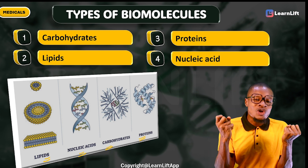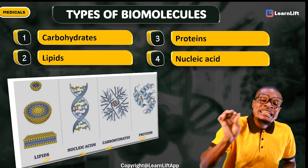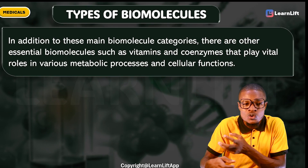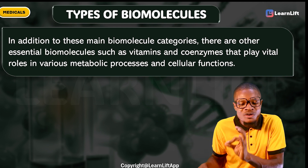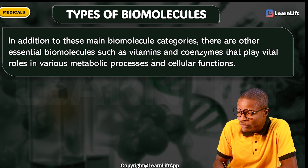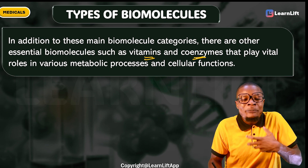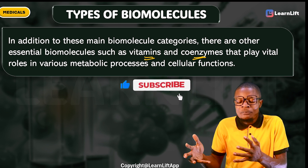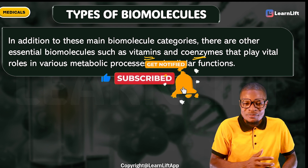Don't forget: aside from these four major biomolecules, there are other essential biomolecules we pay attention to. In addition to the main categories, there are other essential biomolecules — for example, your vitamins and your coenzymes. They play vital roles in various metabolic processes and cellular functions, but we don't group them among the four main or major categories of your biomolecules.